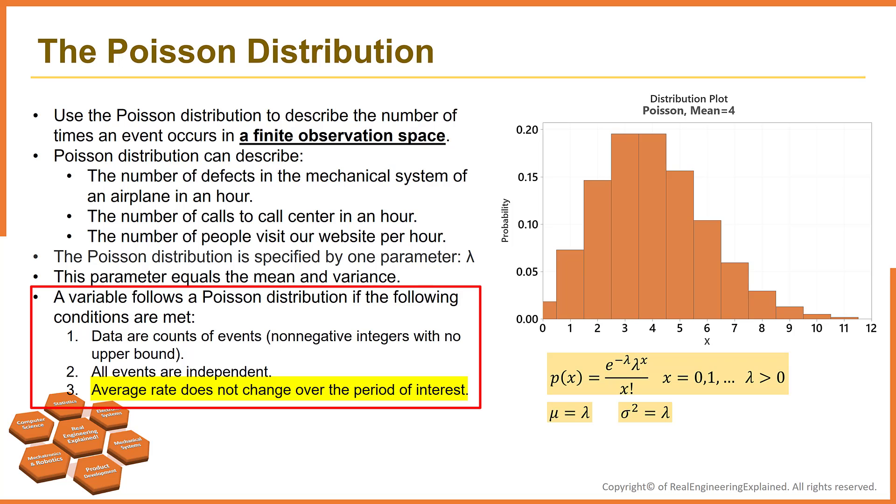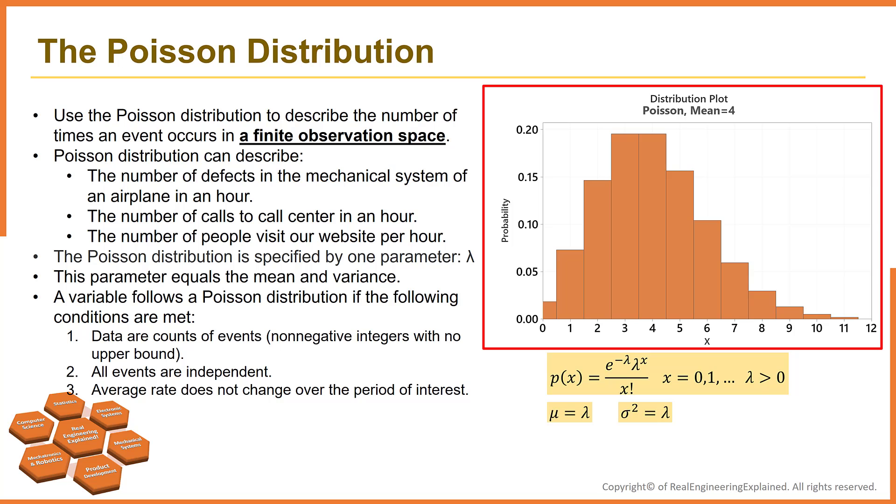The probability plot for lambda equals 4 looks like this. As you can see, the distribution is skewed. It has a long tail to the right. It's a right skewed distribution.